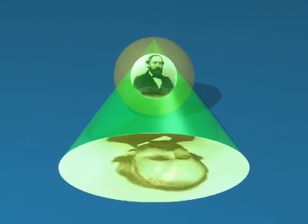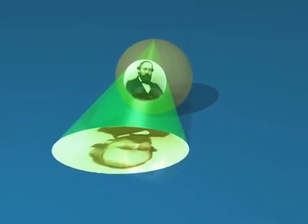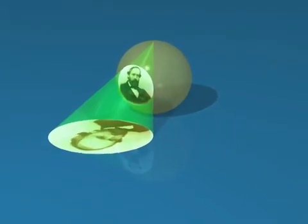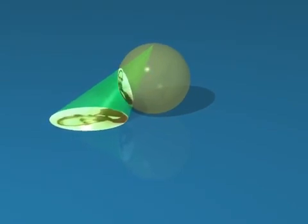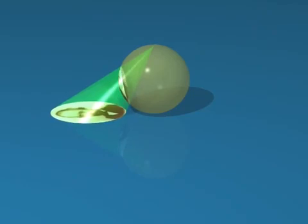We have seen that the stereographic projection sends circles on the sphere, not going through the pole, to circles in the plane. And now we are going to prove it.